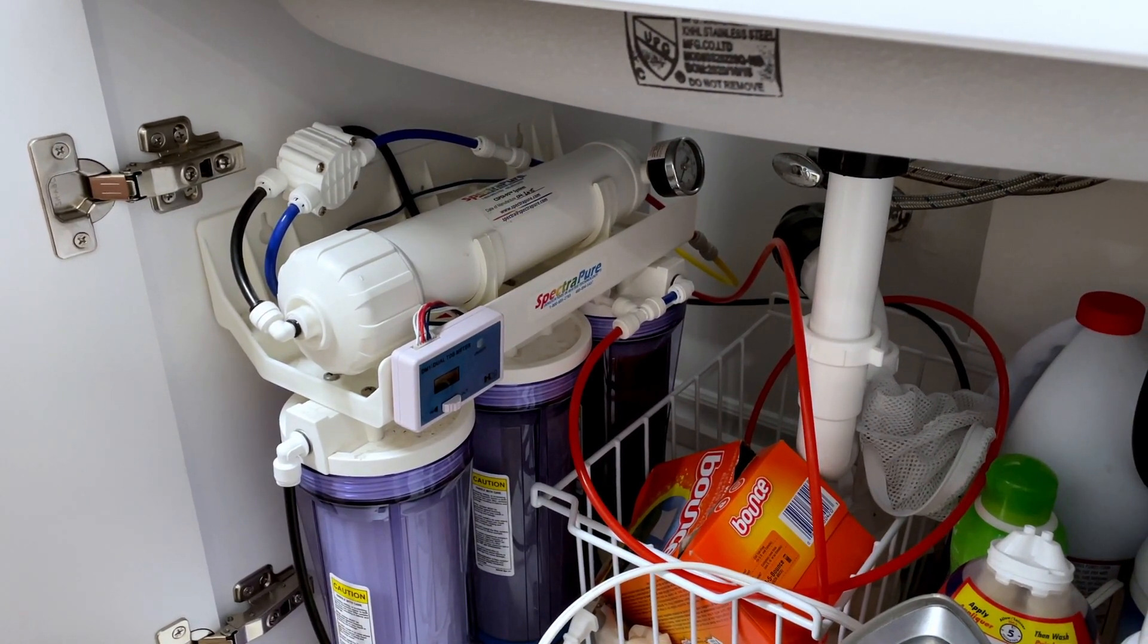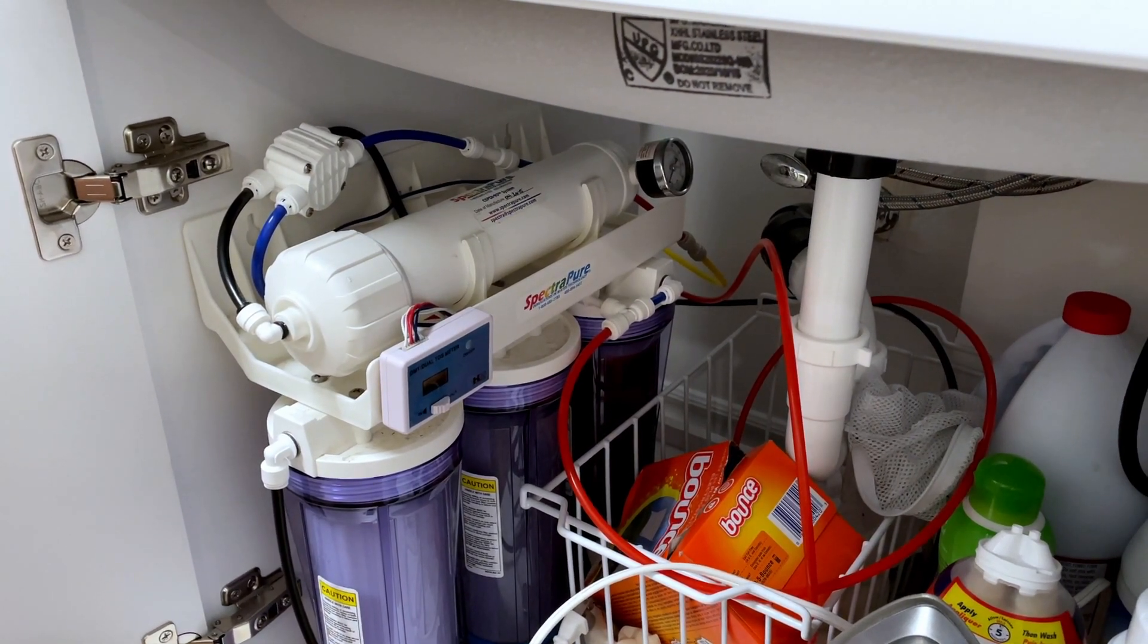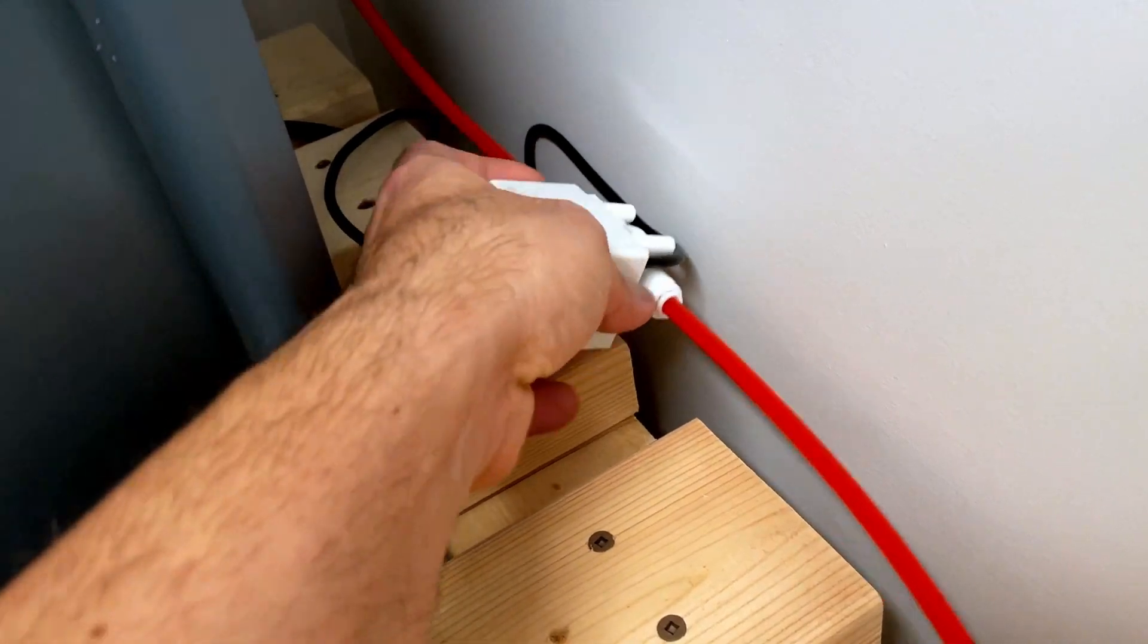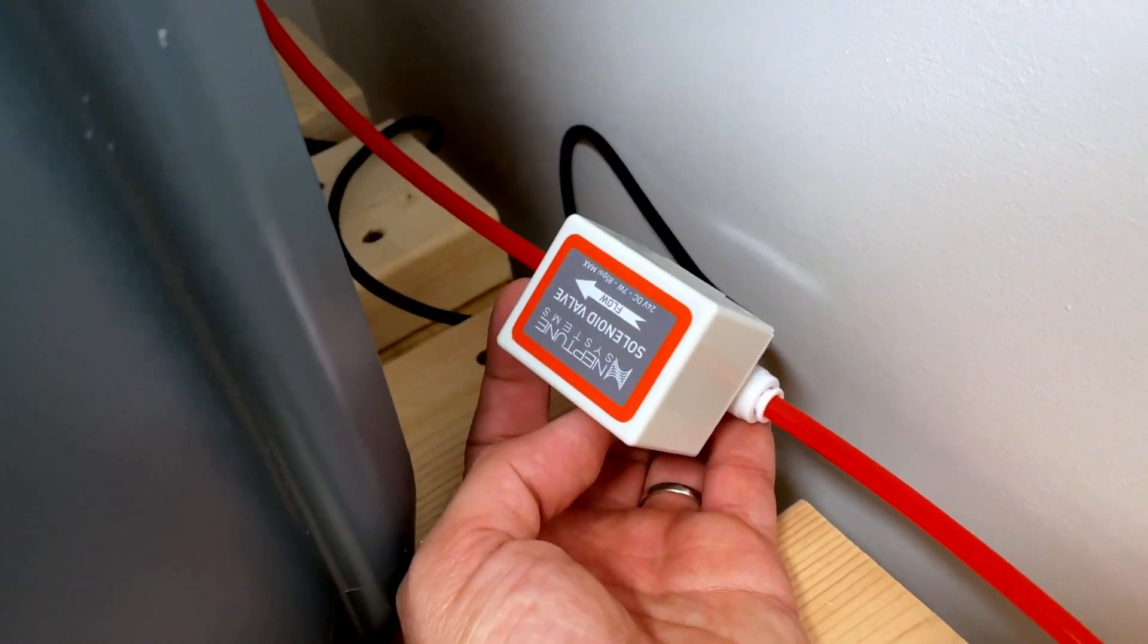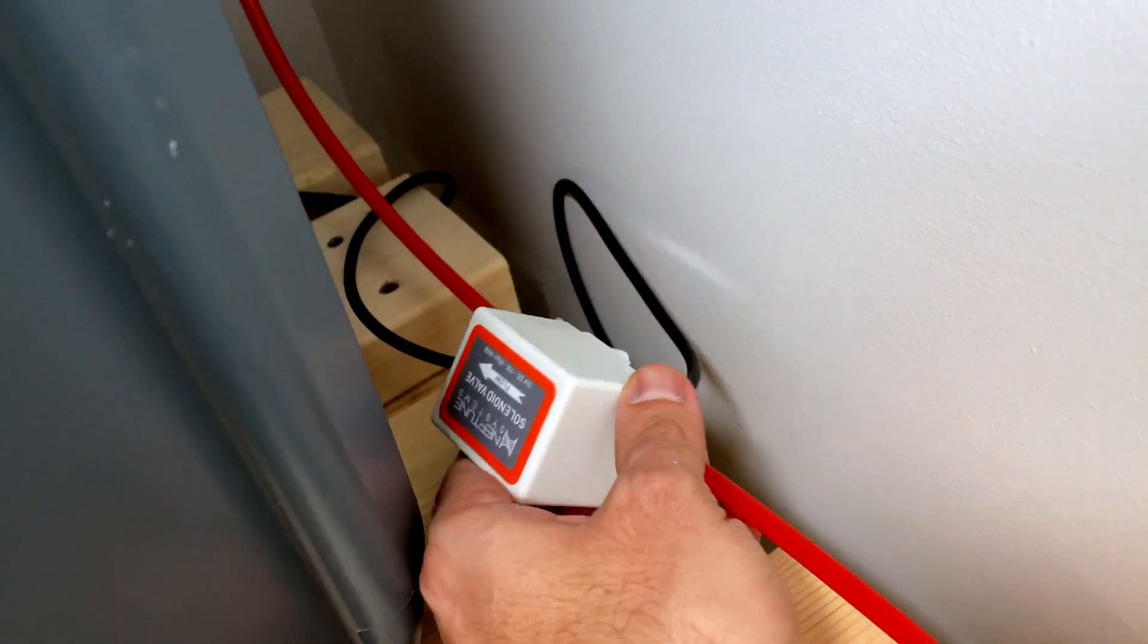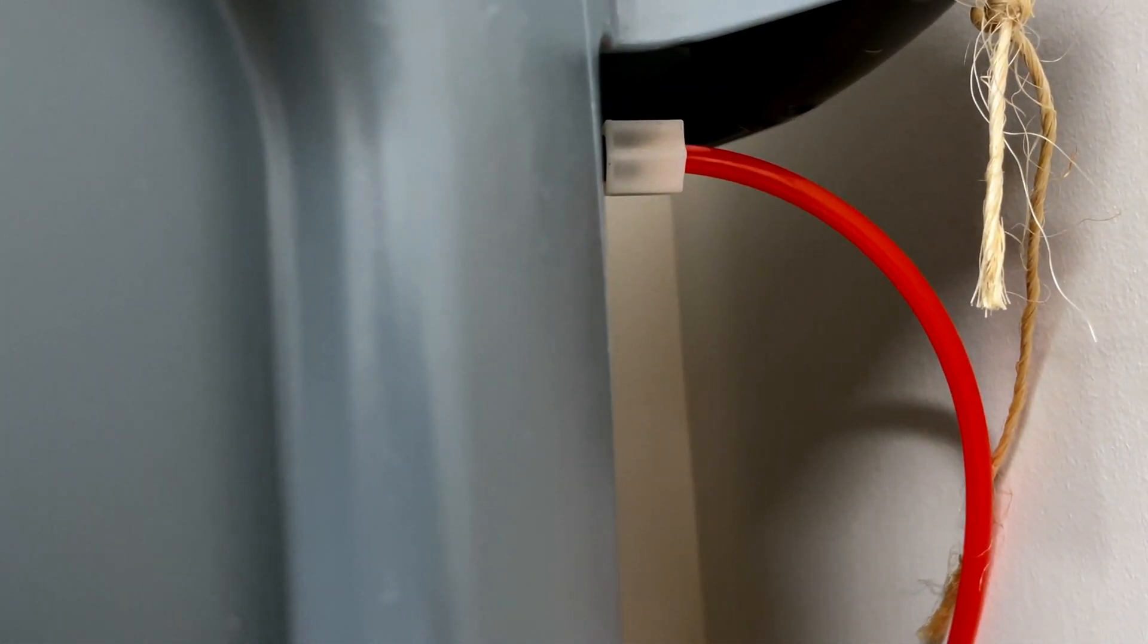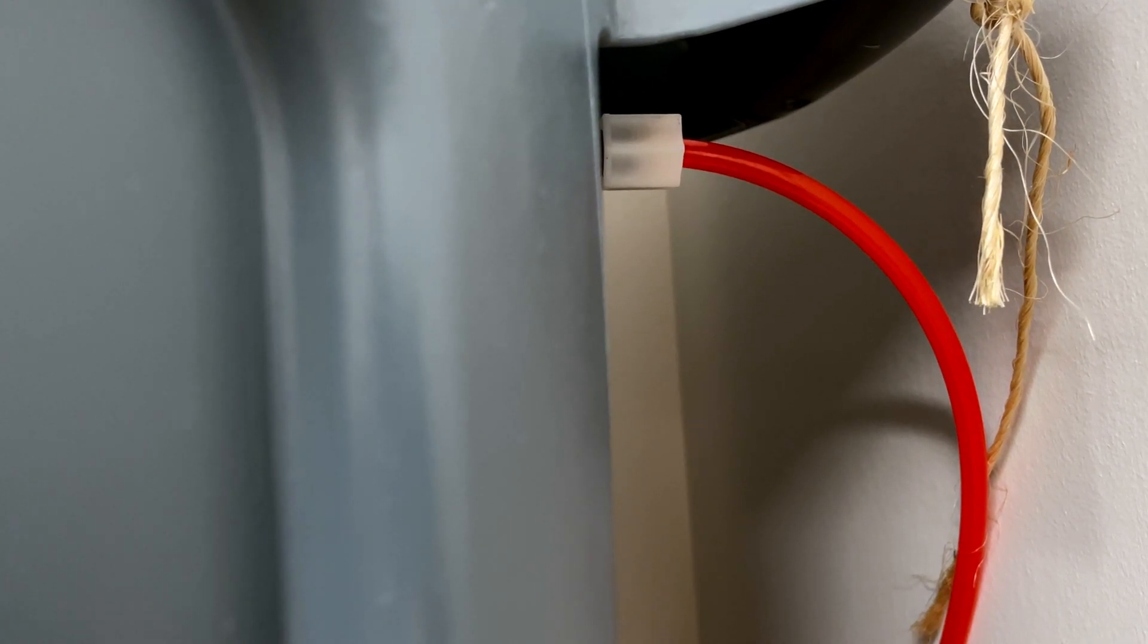So my Spectra Pure RODI system is mounted right underneath my laundry top and that is connected first to an Apex solenoid valve, and the water is then routed to my 55-gallon brute and it's routed through a float valve. The idea here is that without any other systems, the RODI tub will fill up until the float valve shuts off the water supply.